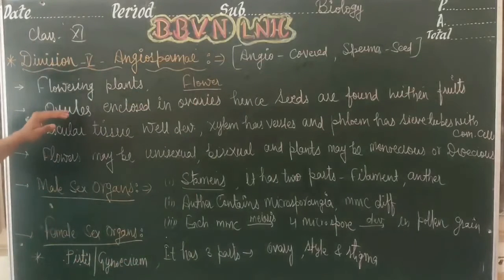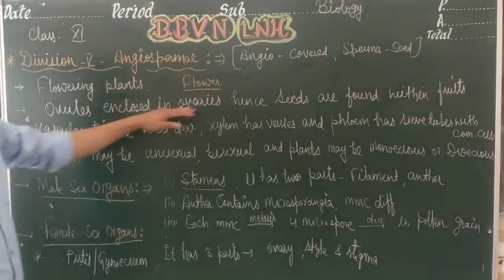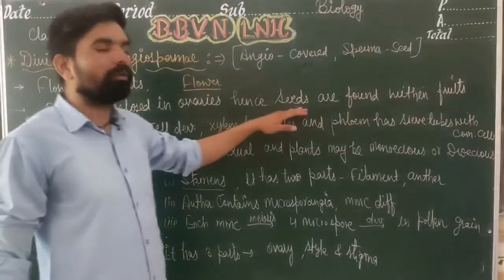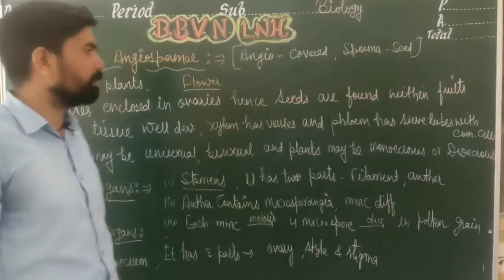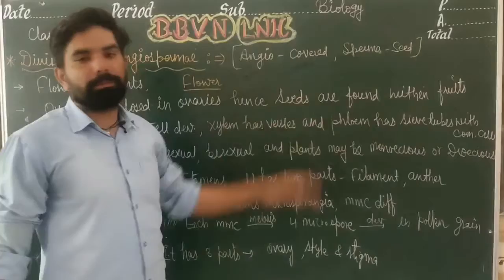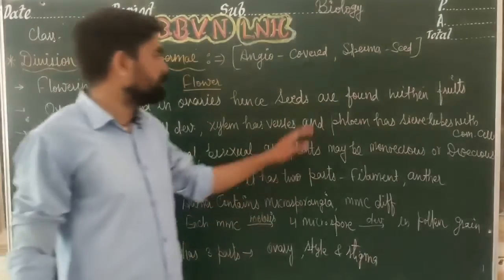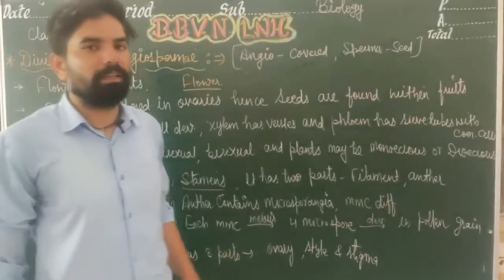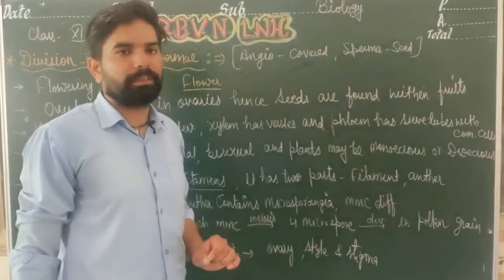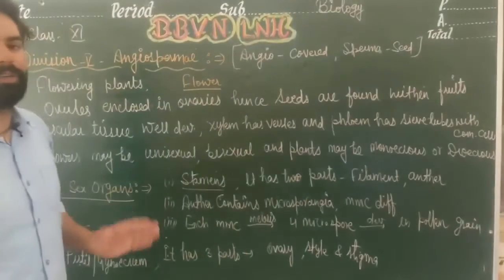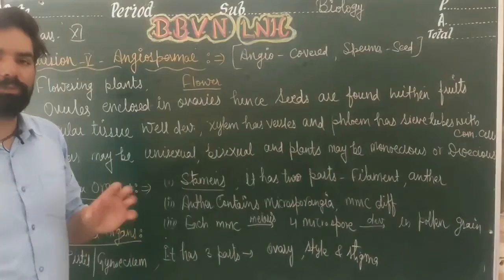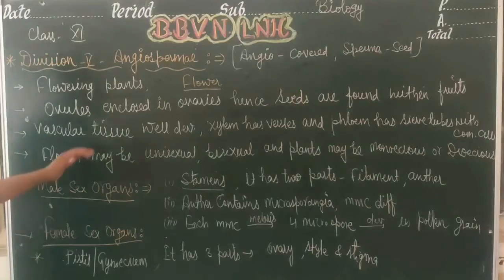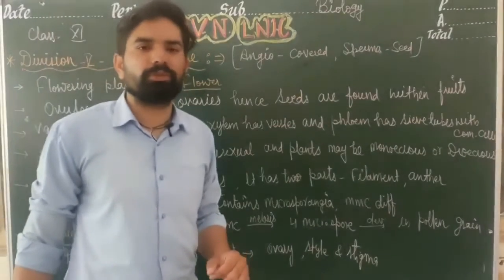Angiosperms have a special reproductive structure known as a flower. Ovules are enclosed in the ovaries, and from those ovules seeds will be formed. Those seeds are found within fruits. In angiosperms, the ovaries are enclosed and fruits are produced with seeds. Next we talk about vascular tissues.